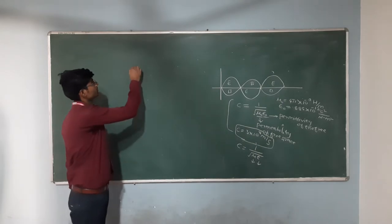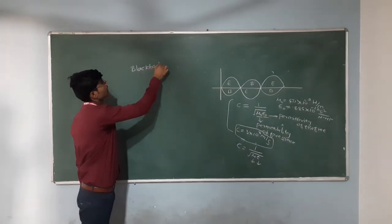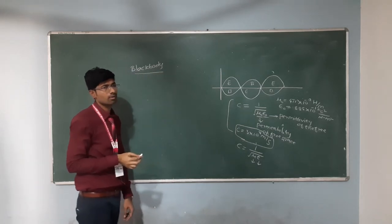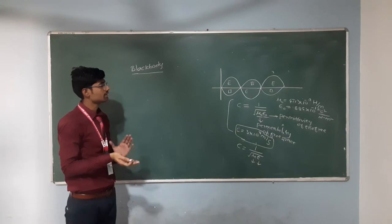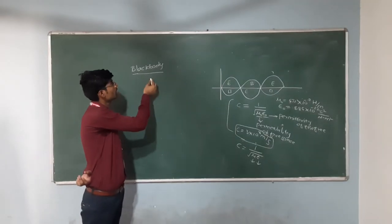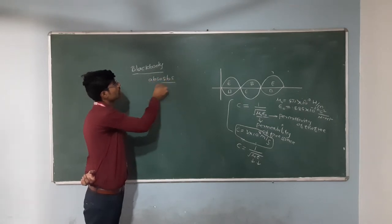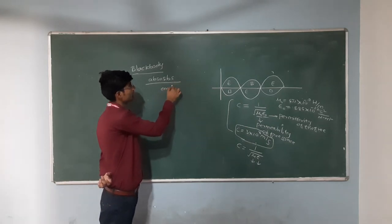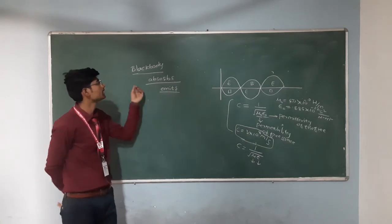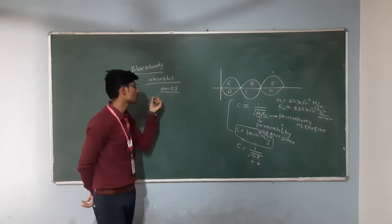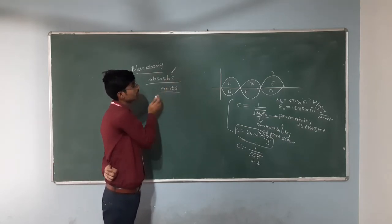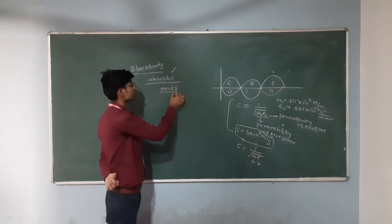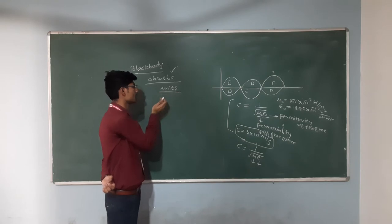Now let us discuss what is black body radiation. A black body is a body in which total incident radiation is absorbed — it absorbs all radiation that is incident on it. At a particular temperature, it emits all the radiations which it has absorbed. So we can say that the black body is a perfect absorber as well as a perfect emitter, because it has to come into thermal equilibrium with the surrounding space.